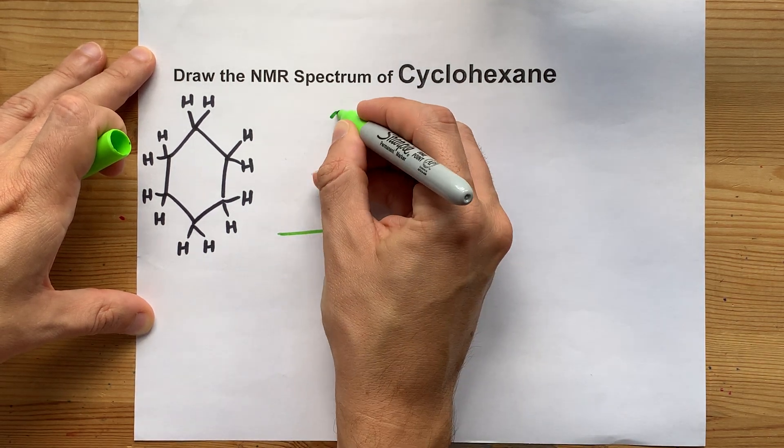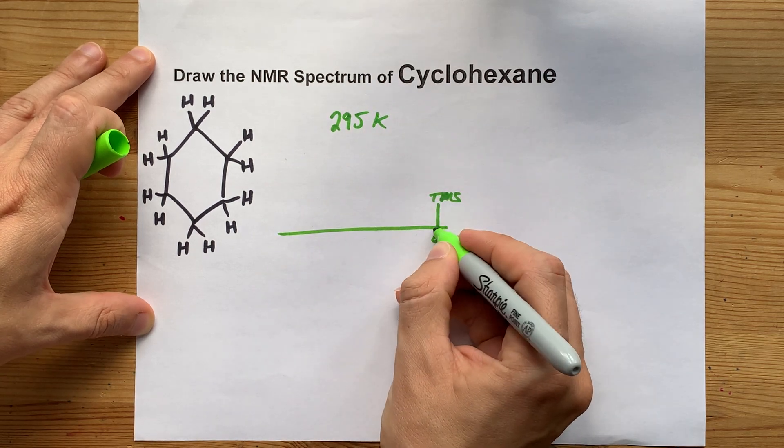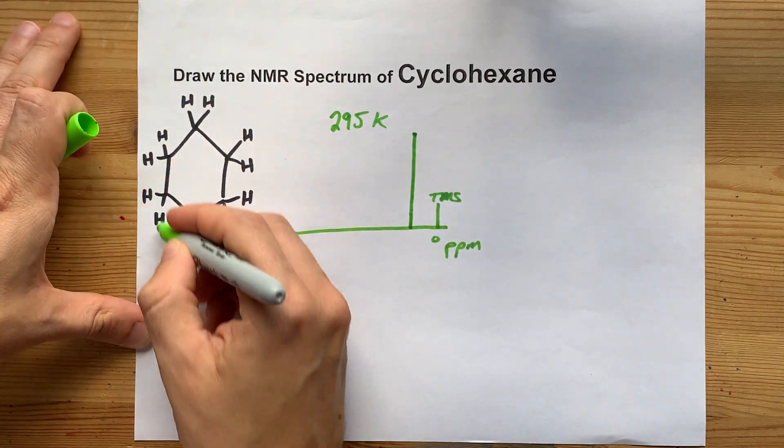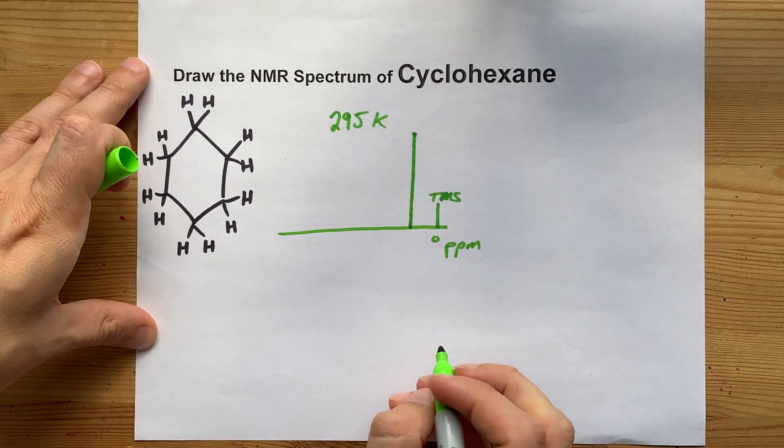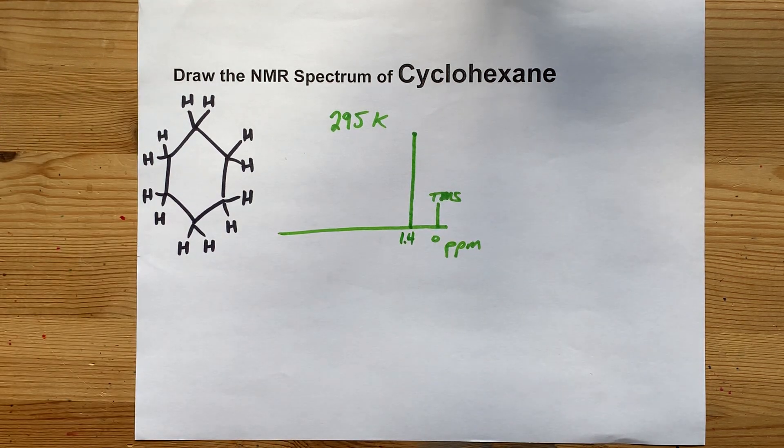At room temperature, 295 Kelvin or so, you're going to get a single sharp peak right here because all 12 of those hydrogens are in the same type of environment. It ends up being at about 1.4 ppm on the example that I had.